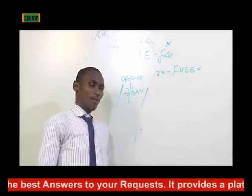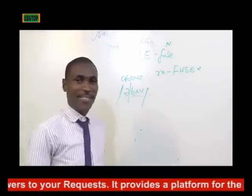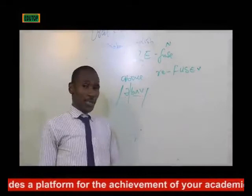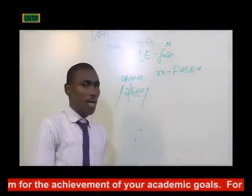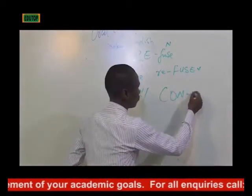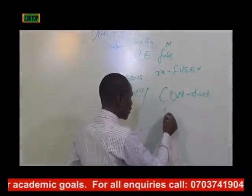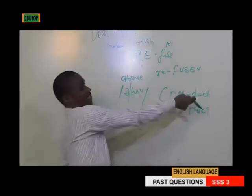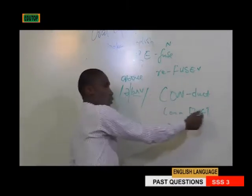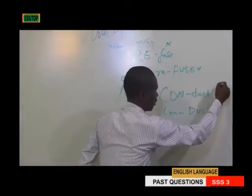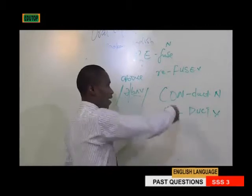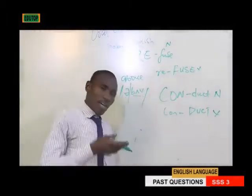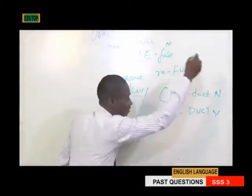The same applies to the word 'conduct' and 'conduct.' We have C-O-N-D-U-C-T for the noun, with stress on the first syllable, and C-O-N then capital D-U-C-T for the verb, with stress on the second syllable. So 'conduct' is the noun and 'conduct' is the verb — for example, 'conduct yourself well.'